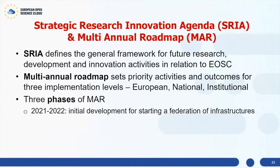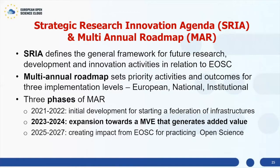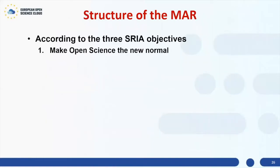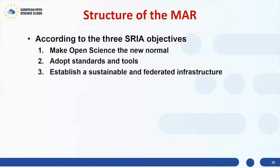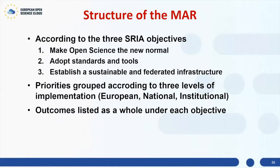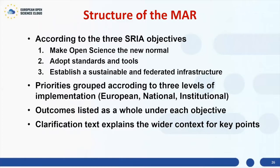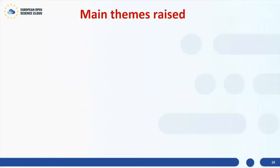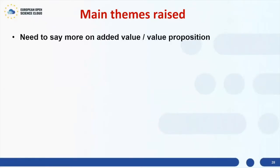We have been working on the Multi-Annual Roadmap, which is part of the Strategic Research and Innovation Agenda. The roadmap sets the steps at three different levels — local, national, and European — with three phases: 2021-2022, which is currently running; 2023-2024, which we are just developing now; and then a further phase to be defined. The three main objectives structuring the roadmap are: make open science the new normal, adopt standards and tools, and establish a sustainable and federated infrastructure.